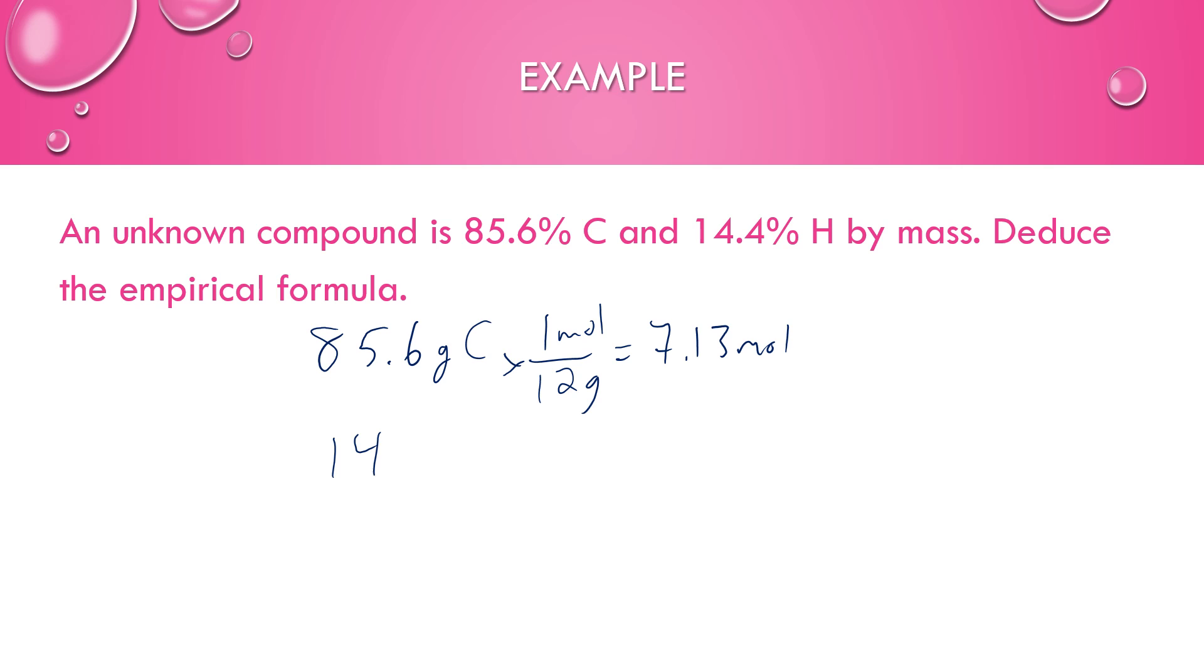Do the same thing for hydrogen. Hydrogen's mass is 1. And once I have the moles, I can divide by the smallest number to get the mole ratio. So for every one carbon, there are two hydrogens. So my empirical formula is CH2.